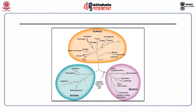The current diagram depicts the three domains of life forms. One is the archaea domain which consists of methanobacterium, halophiles, thermophiles and sulfolobus bacteria. The other domain is the bacterial domain which consists of green non-sulphur bacteria, spirochetes, chlamydia, green sulfur bacteria, cyanobacteria, mitochondrion and plastids.